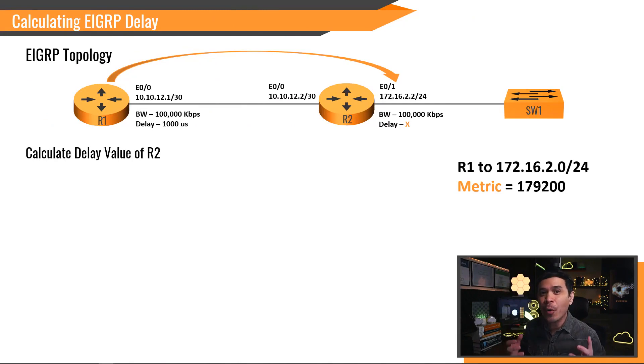Now, what if the requirement is to get the specific EIGRP metric value? How can we configure our routers so that R1 would get an accurate metric value, 179,200 to network 172.16.2.0/24? We already know the formula, but how do we really apply it in this scenario? Let's do this! So, the bandwidth is something that we don't normally change, so we will keep it. We need to find the delay value, either R1 or R2. Let's just go with R2. The equation is ready. Let's begin algebra!